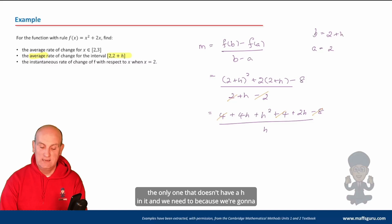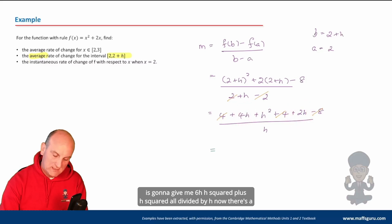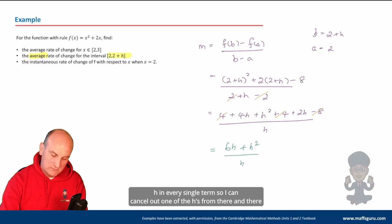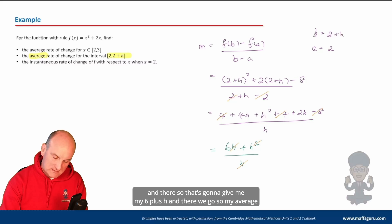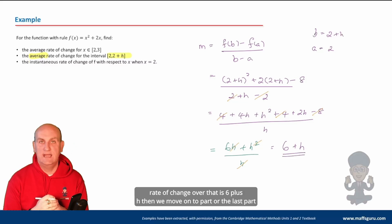We're looking for that last constant term to disappear — as in differentiation from first principles, the only term without an h must cancel. So we get four h plus two h giving six h, plus h squared, all divided by h. There's an h in every single term, so cancel one h from each: that gives me six plus h. So my average rate of change over that interval is six plus h.